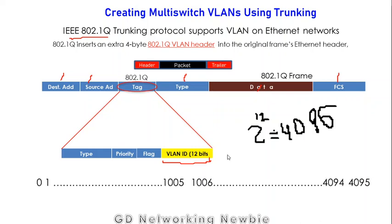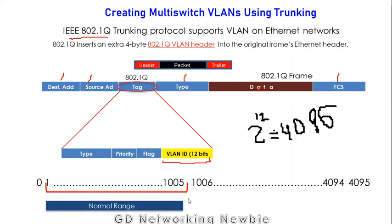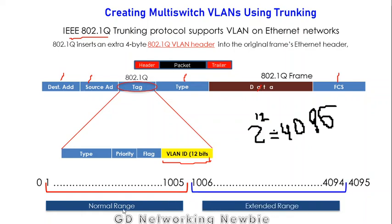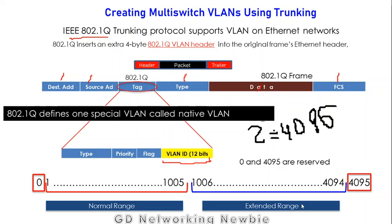The VLAN ID range goes from 0 to 4095, divided into two parts: 1 to 1005 is the normal range, and above that is the extended range. We normally use the normal range; with some additional configuration we can use the extended range as well. The very first and very last numbers are reserved and not used as VLAN IDs. The 802.1Q protocol also defines one special virtual LAN known as the native VLAN.